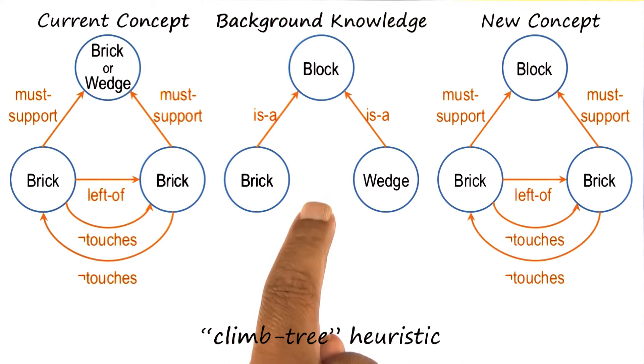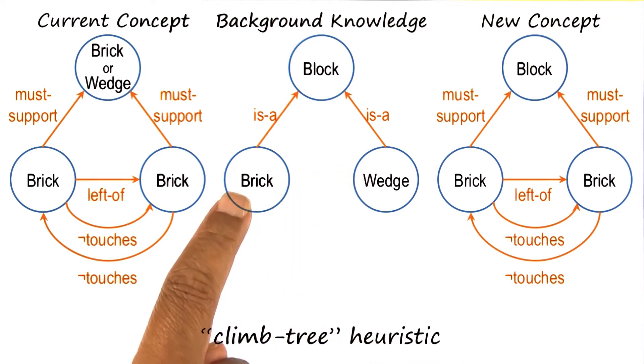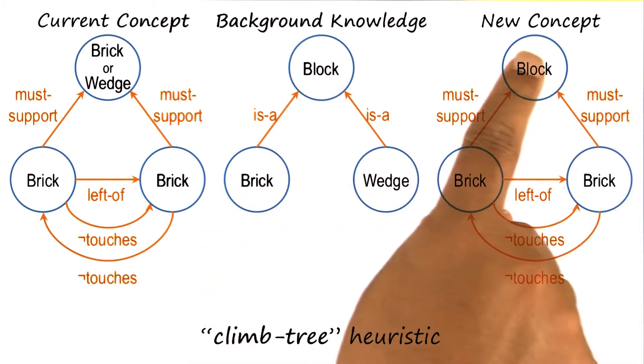Suppose that there was another kind of block that was possible, say a cylinder. So now that the AI programmer has generalized from brick and wedge into a block, and this is the current definition.